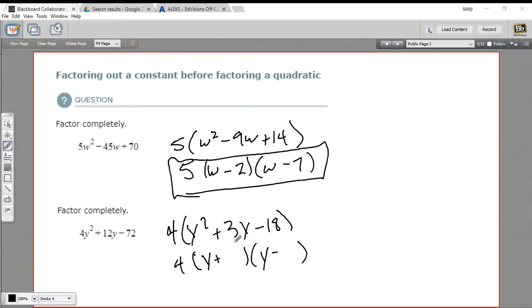And we want to add up to a positive 3. 3 times 6 is 18. If I put a positive 6 and a negative 3, that would add up to a positive 3. So there are my factors. 4 times y plus 6 times y minus 3. So that is a little bit of practice with factoring out a constant before you factor a quadratic.